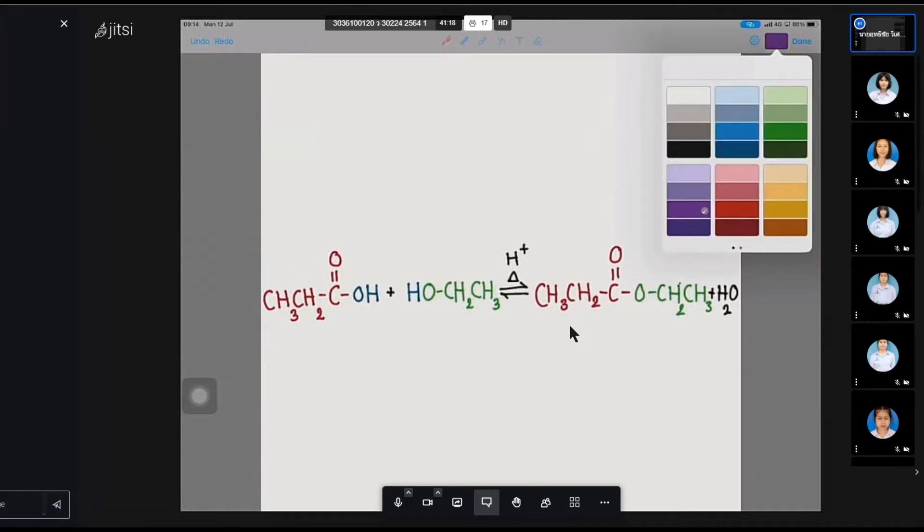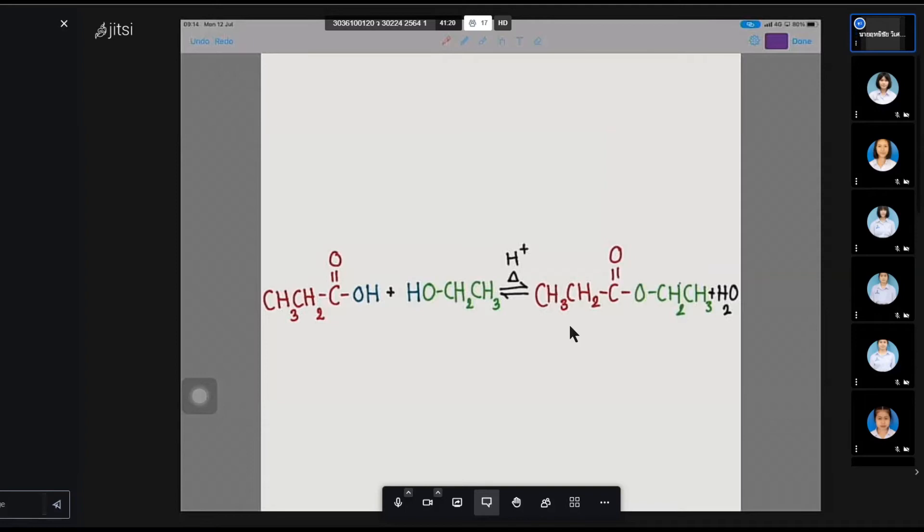The first example is propanoic acid, CH3, CH2, COOH, which is propanoic acid. The alcohol is OH, CH2, CH3, C2 atoms, which is ethanol, which is alcohol. This is the alcohol and carboxylic acid.